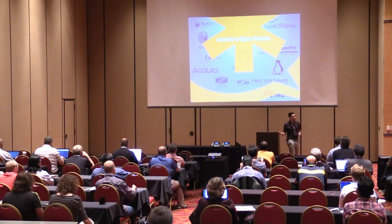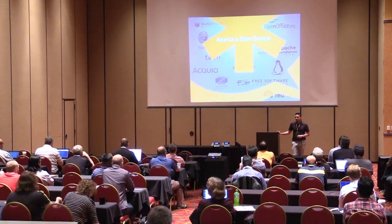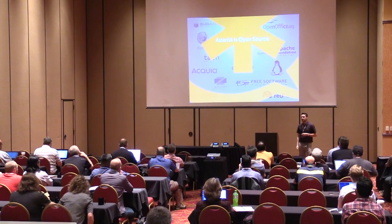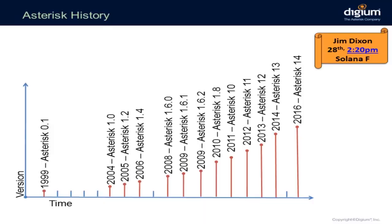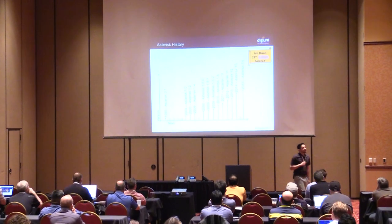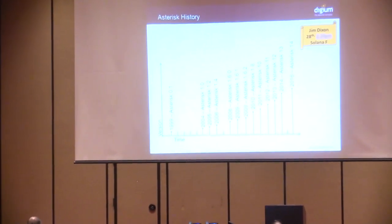Asterisk is developed by a community of developers — it's not just Digium — and we have some of those developers here today at Astericon, so you might get a chance to meet them. Asterisk versions: it started in 1999 with Mark Spencer, and pretty much every year after 2004 we have a new version. We just got Asterisk 14 yesterday.